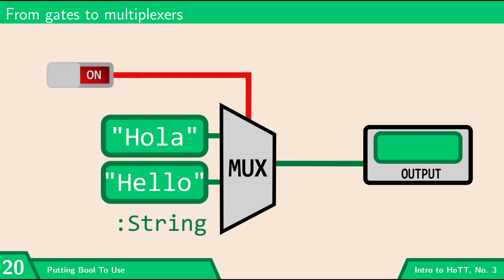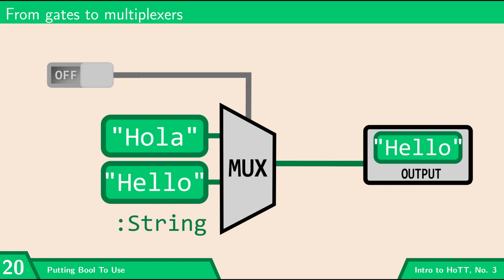How the multiplexer works is: if its boolean input is on, then the output is going to be the first value. So if my first value is 'hola' and my second value is 'hello', and the input is on, then the output is going to be 'hola'. Whereas if the boolean input is off, then the output of the multiplexer is going to be the second value, 'hello'. Technically electrical engineers work with more complex multiplexers, but this is all we're going to be thinking of.